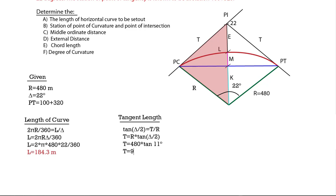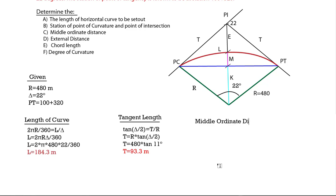Tangent length is the length between PC and PI. The length between PI and PT is equal to the length of PC and PI — these two tangent lengths are equal.